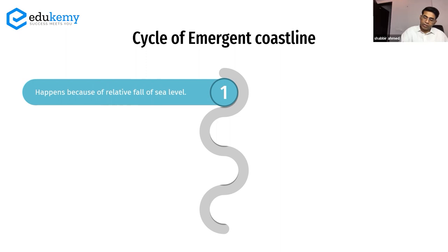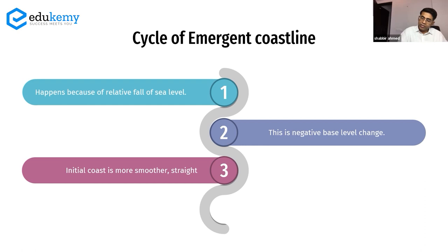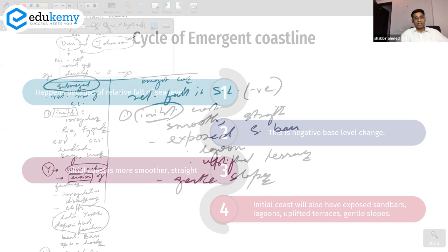For the emergent coastline cycle, this happens because of a relative fall in sea level — a negative base level change. The initial coast in an emergent coastline is smoother and straighter, with exposed sand bars, lagoons, uplifted terraces, and possibly backwaters. The initial coast generally has very gentle slopes.